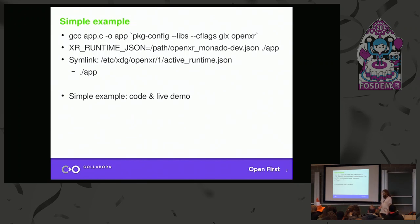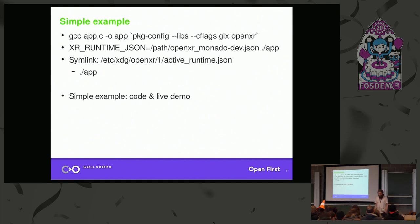There is absolutely no abstraction in this example. You can read it from top to bottom and see what's going on directly. It is currently Linux-only and only OpenGL, but pull requests are welcome if you want to implement Windows support. And this is how you would compile an example for OpenXR — basically there is a pkg-config file provided by the OpenXR SDK and you just use the link and C flags from that.